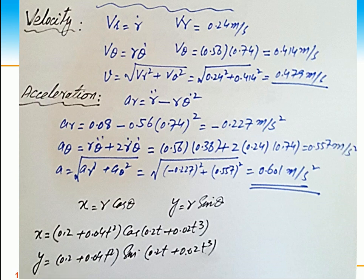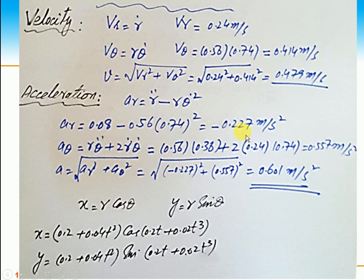Now, vr = ṙ = 0.24 m/s and vθ = r · θ̇ = 0.56 × 0.74. Taking √(vr² + vθ²) gives the final velocity of the slider as 0.479 m/s. For acceleration: ar = r̈ − r · θ̇² — substituting values gives ar = −0.227 m/s². The negative sign shows the radial acceleration is directed towards the point of rotation. For aθ = r · θ̈ + 2ṙ · θ̇, substituting values gives aθ = 0.557 m/s². Taking √(ar² + aθ²) gives the total acceleration of 0.61 m/s².